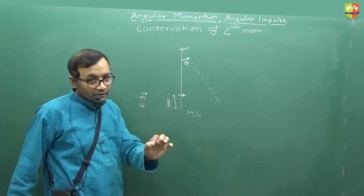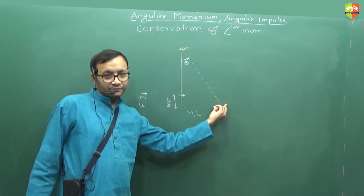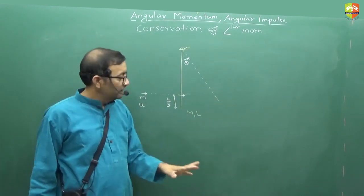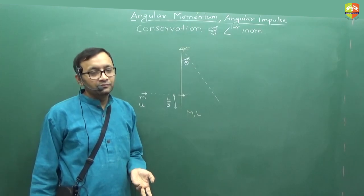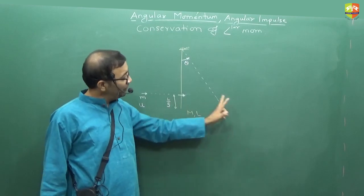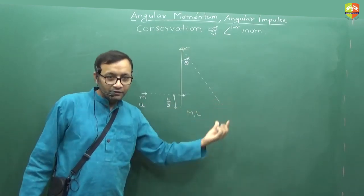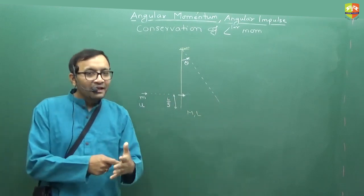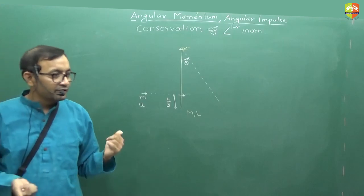Just one question. Can I use conservation of energy between this point and that point? No. There's a collision, loss of energy will happen. Once it's collided, after that, this point to that point you can use, but not between this point and that point. Because of the collision, some energy will be lost. It is an inelastic collision, right?